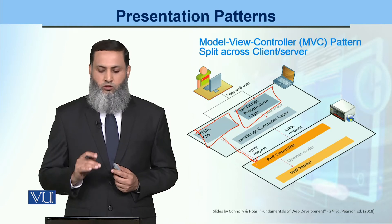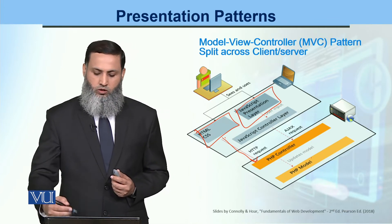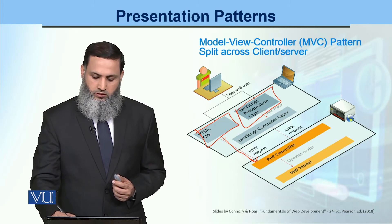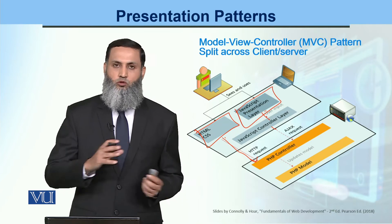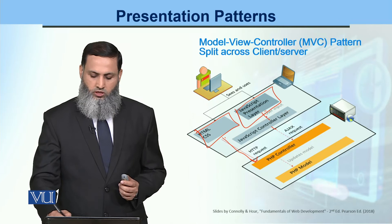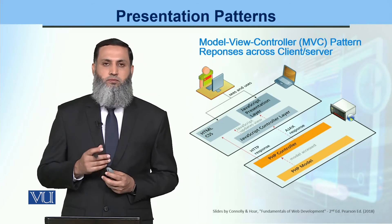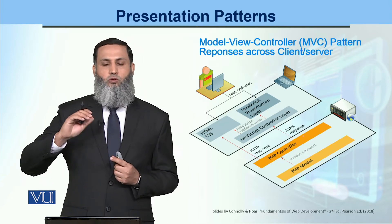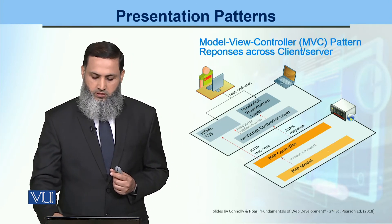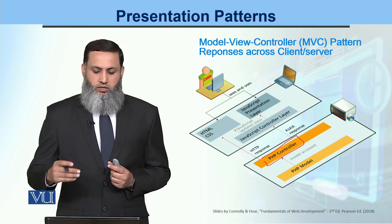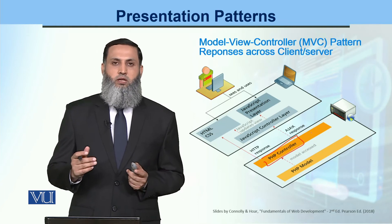The request goes to the controller — this could be a PHP controller or a JavaScript controller. This request can be handled by the same controller, which then sends an HTML request. The controller will tell the model exactly what is needed: for example, a list of courses. The controller then sends information back to the client side, where we can have front-end frameworks or simple HTML.